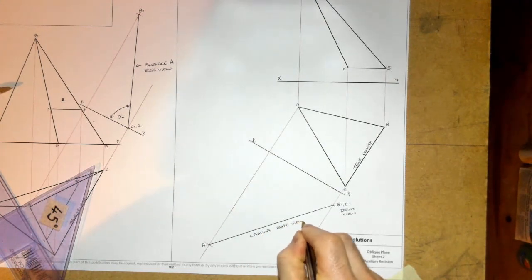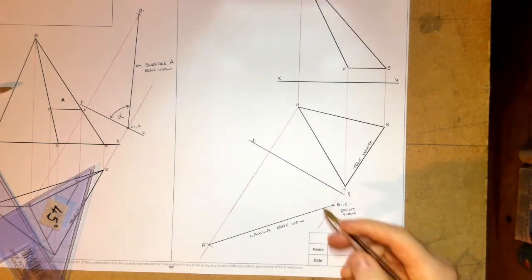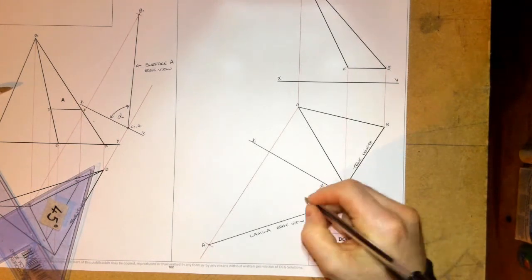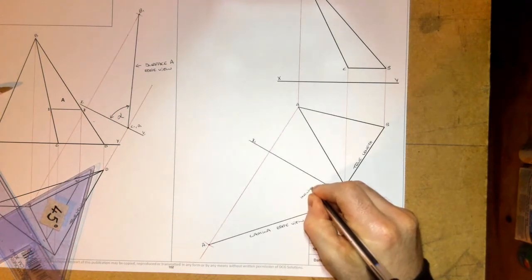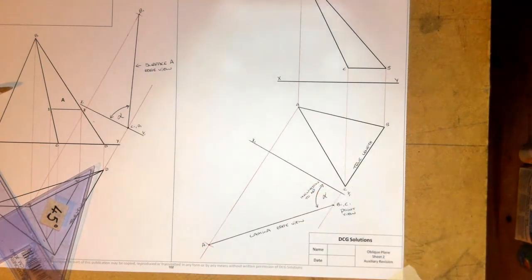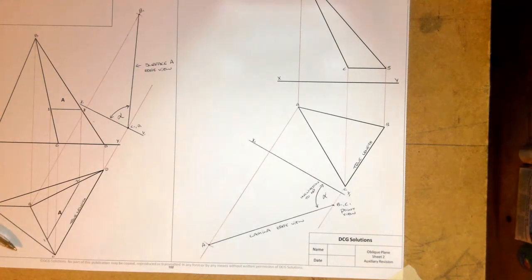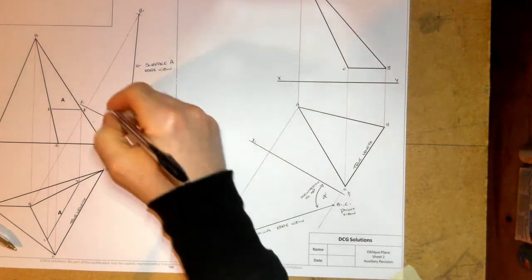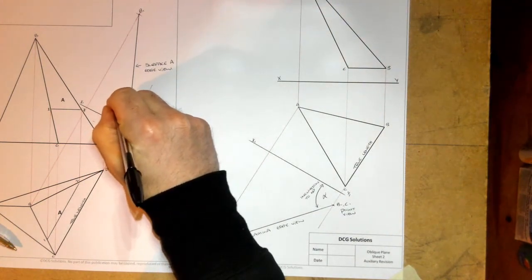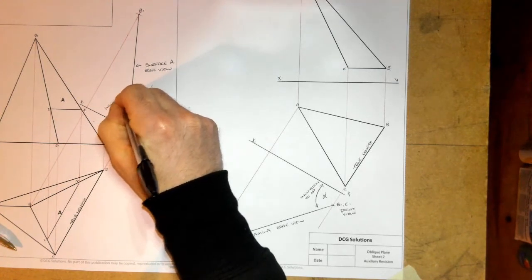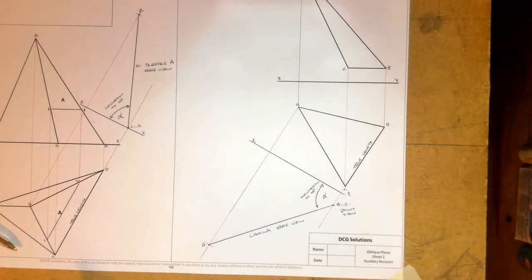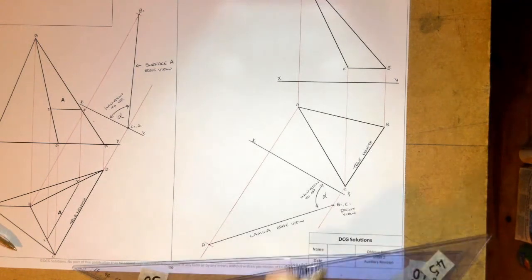Because I can see the lamina as an edge view, I can now see its inclination to the horizontal plane. Both questions were very similar — in each case we looked along a true length found in the plan view to get the inclination to the horizontal plane. The key skill is being able to identify where the true length is. Best of luck with those two questions, and we'll move on to the next step on oblique planes.